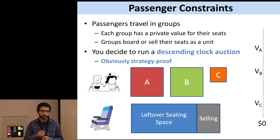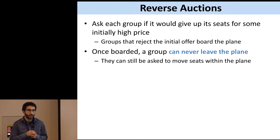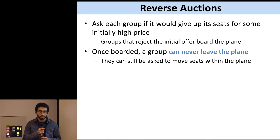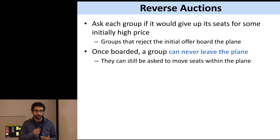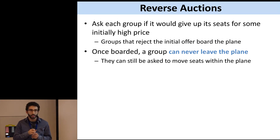The way you're going to allocate these seats is with a descending clock auction — an obviously strategy-proof auction. Initially, you offer every group a really high price to not board the plane, hoping many groups will say yes. Some might say no, and those groups that reject your offer will board the plane. The rule in this auction is: once you board the plane, you're never getting off. It's possible we can ask you to move seats to accommodate other groups, but you can never leave.